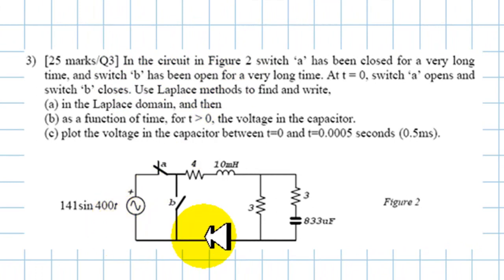In the circuit in figure 2, the switch A has been closed for a very long time, and the switch B has been opened for a very long time. That means the circuit is in steady state. The source is AC, the circuit is in AC steady state. But that is the previous question, question number 2. At t equals 0, this switch opens and this switch closes.